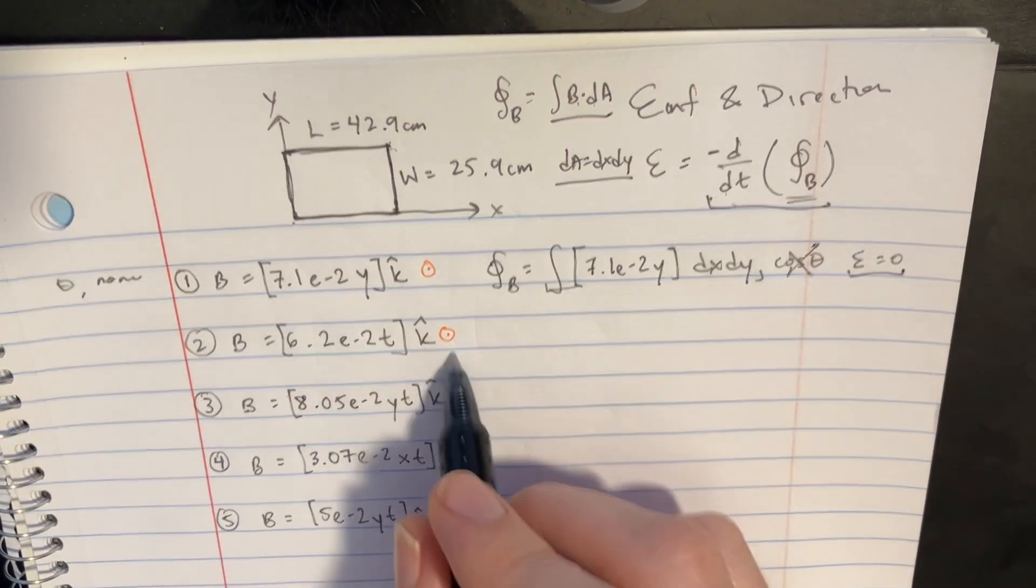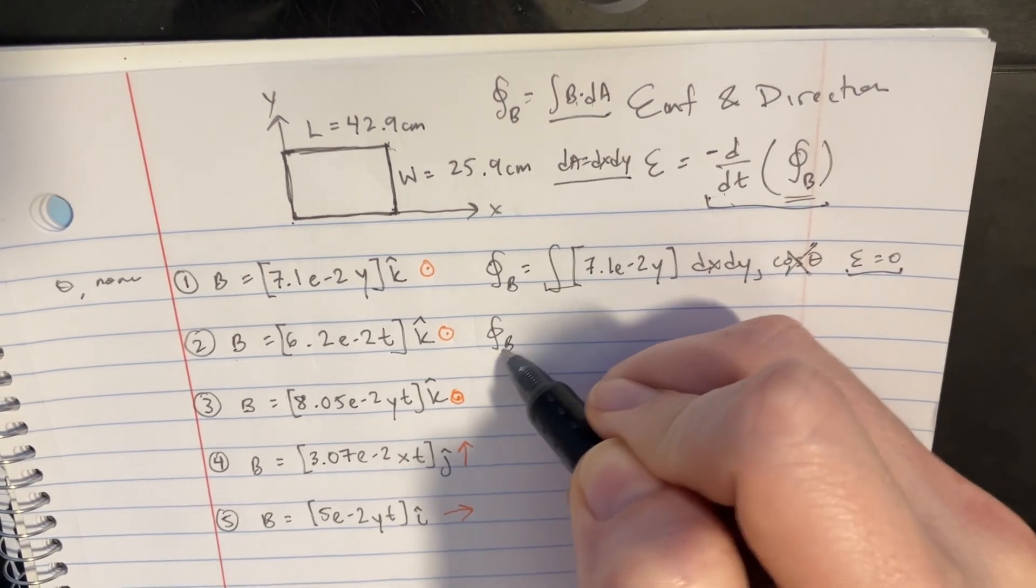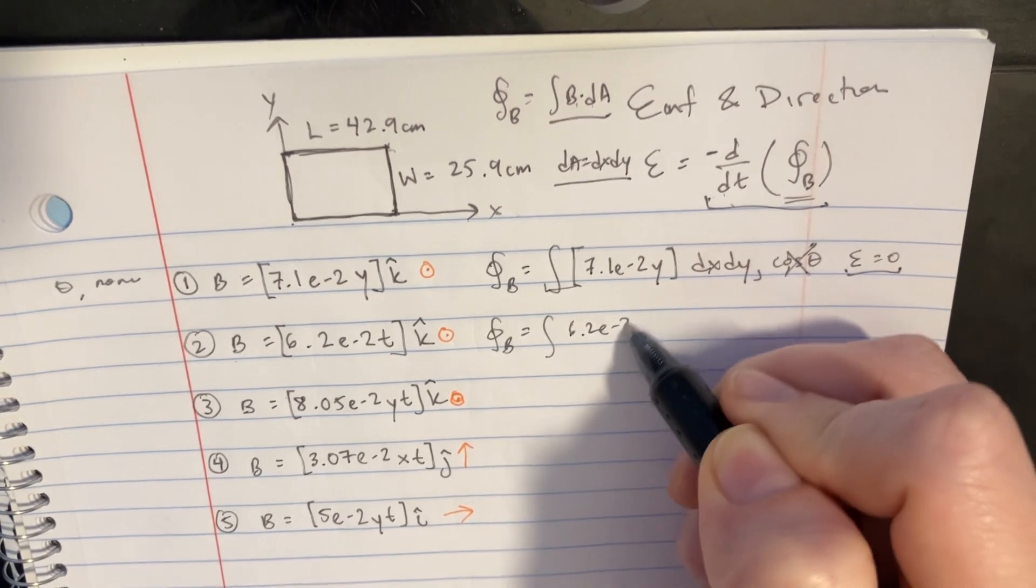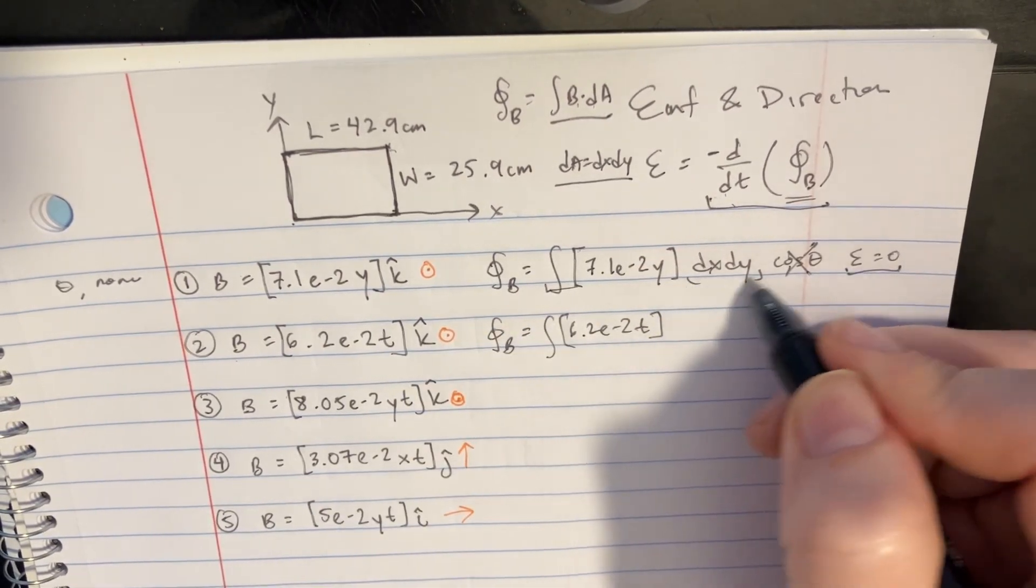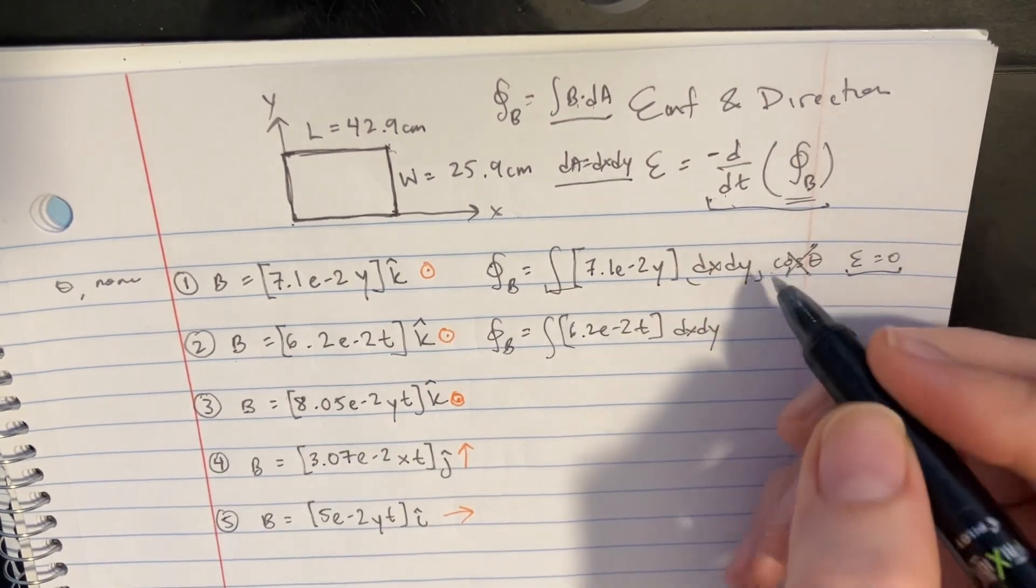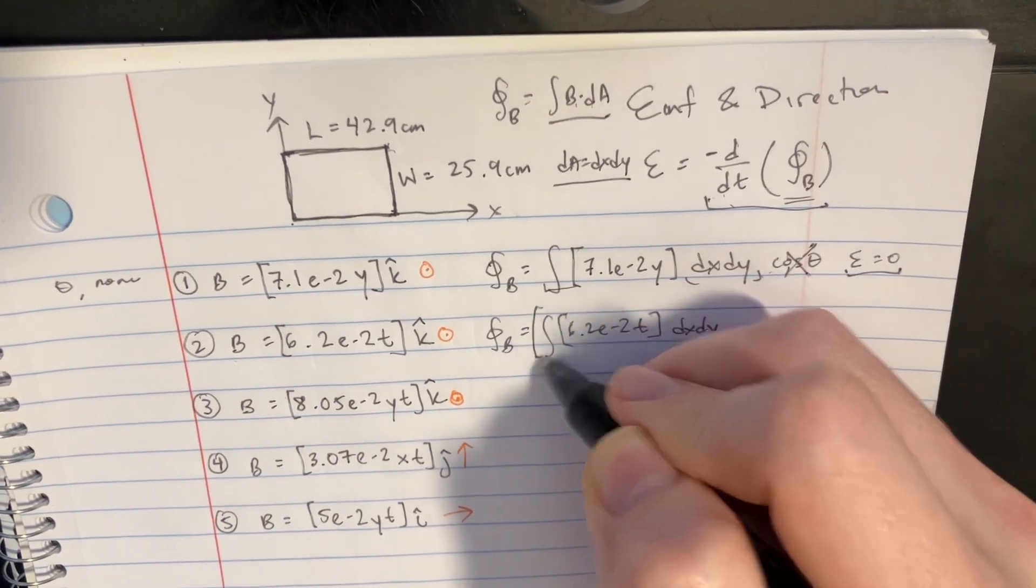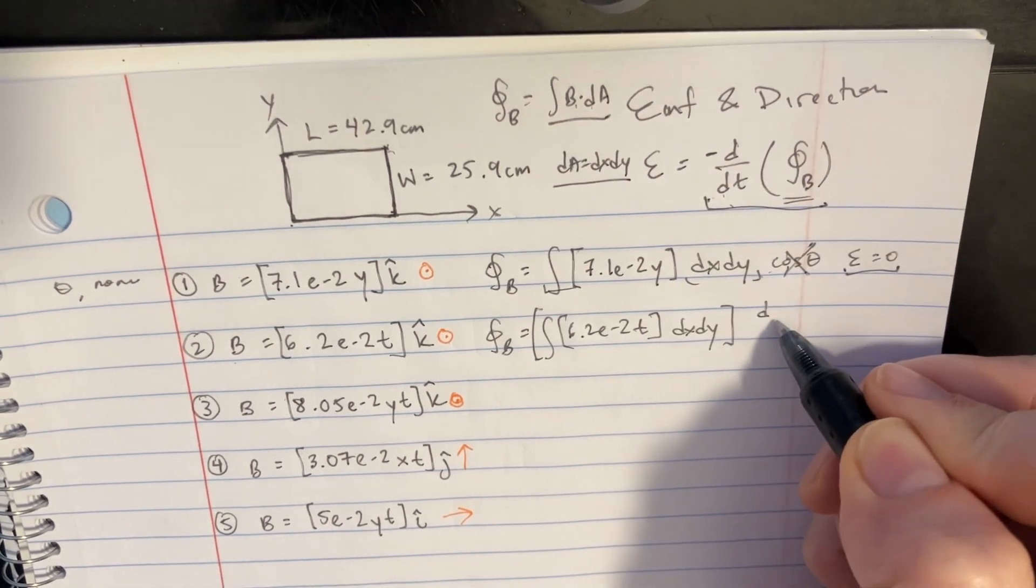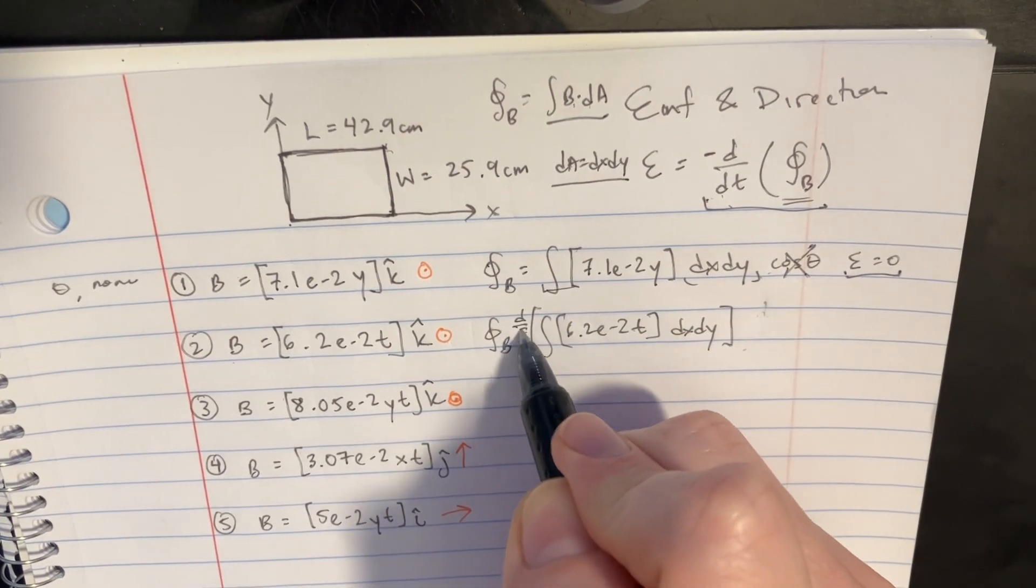Now in the second one, we have this one. Let's try to set up the integral again. We'll have 6.2e to negative 2t here, and then there's going to be the dx dy. Cosine is going to be just 1, so we'll get rid of that. But for here, what we're going to have to do next is take this and take the time derivative of that. So we'll basically just go d over dt, like this.